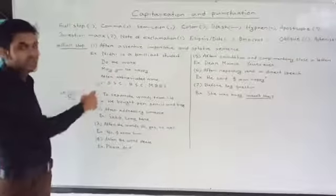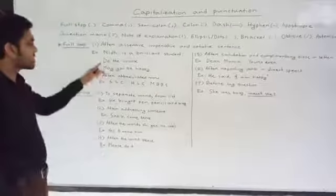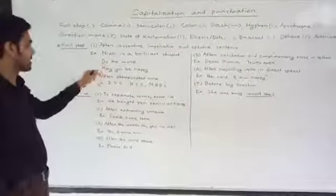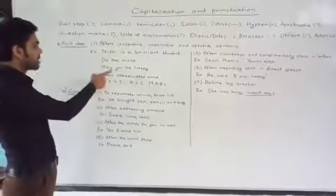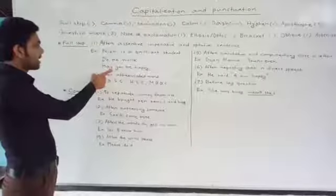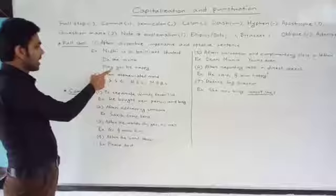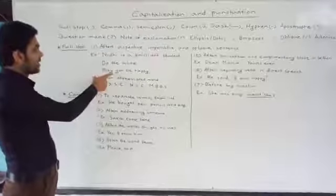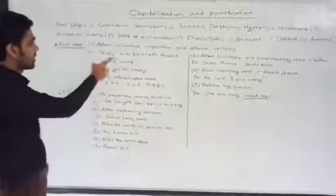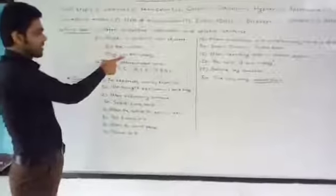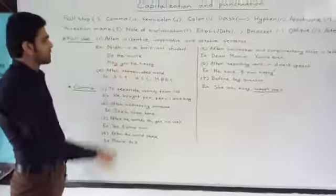And in Imperative sentence, there is no visible subject. And in Optative sentence, at the beginning of the sentence, we shall have to write May. Then, rest part of the sentence will be much like Assertive sentence. May, then subject, then verb, then object.